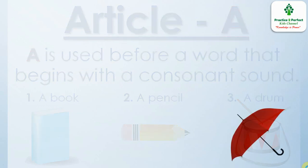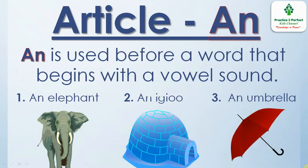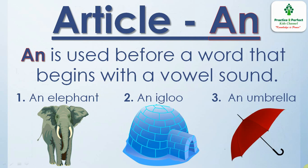Next is article an. An is used before a word that begins with a vowel sound. Let us see a few examples. The words elephant, igloo, and umbrella — they all begin with a vowel sound, so we use article an before these words.